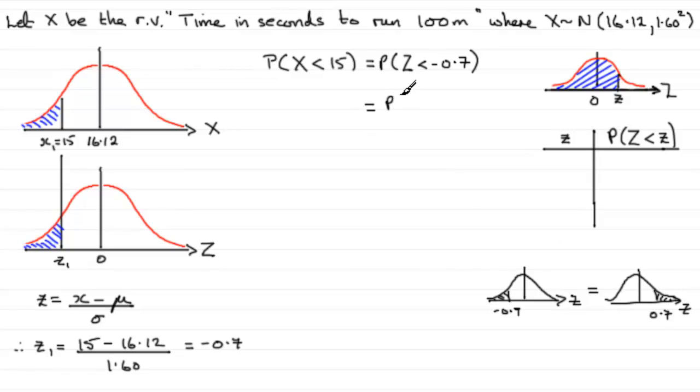So, we can say that this is equal to the probability that Z is more than 0.7. Okay, so we've got the same as this area, but we want area to the left of Z. Well, we know that the whole area should come to 1. So, all we need to do is 1 minus the area to the left of 0.7. In other words, 1 minus the probability that Z is less than 0.7.